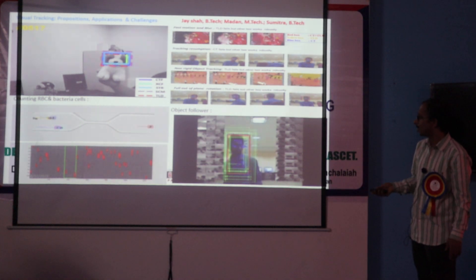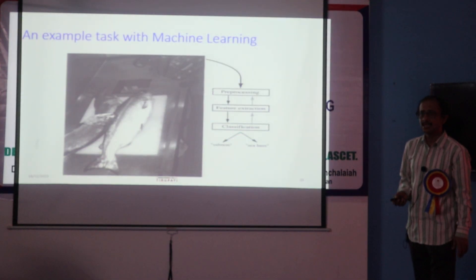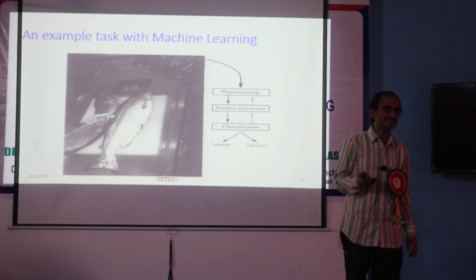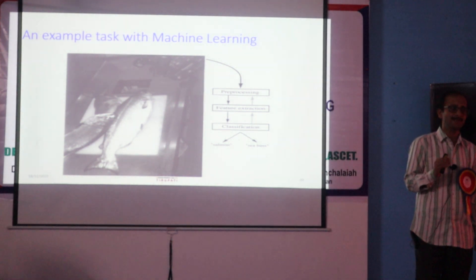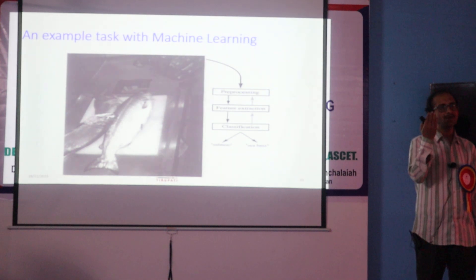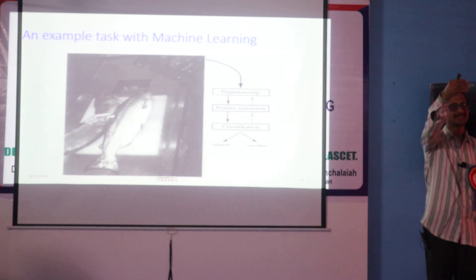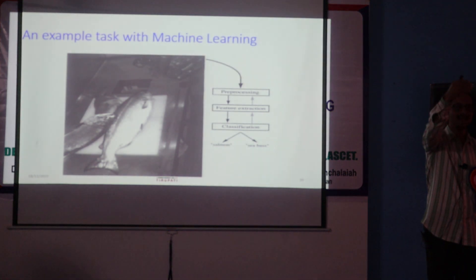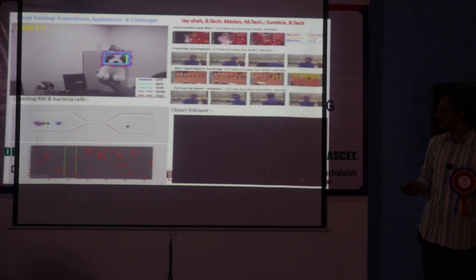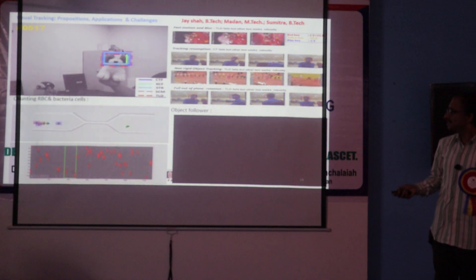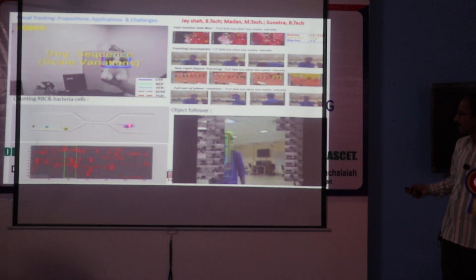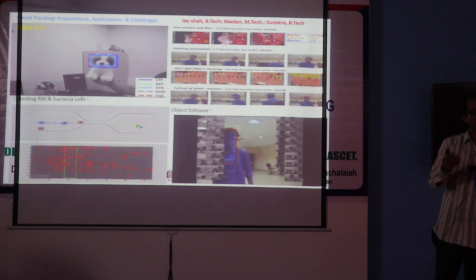Many computer vision tasks can be posed as a classification problem. What do we mean by classification? Say if I want to detect a face, I take a patch and say whether there is a face in that patch or not. Similarly, if I want to track, I ask: is this the same object of interest or not?